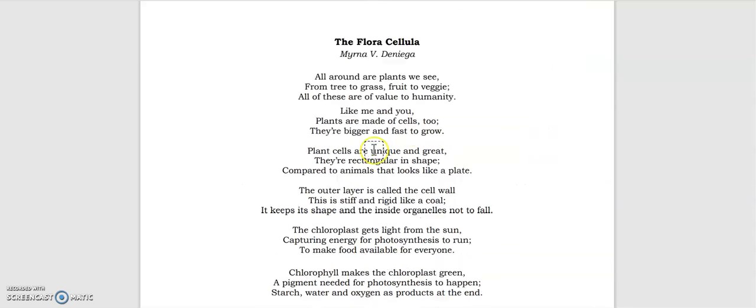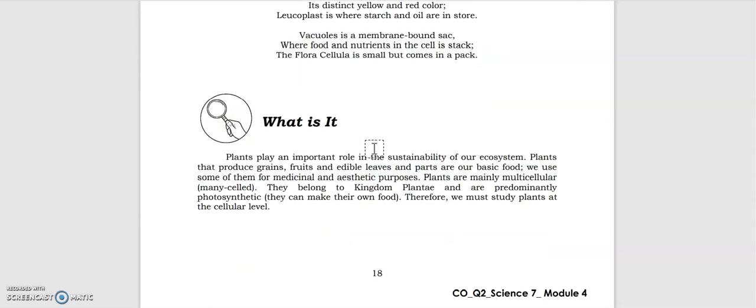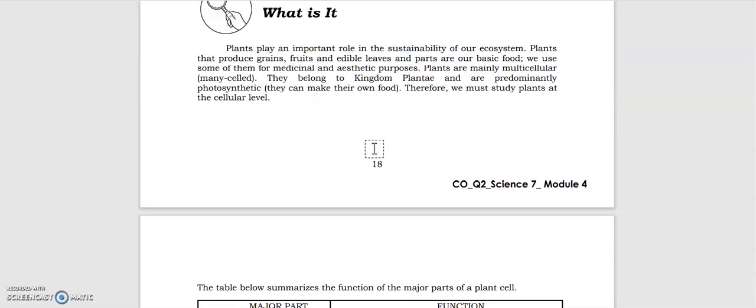For the 'What's New' portion we have here the poem - let me just read that one on your own. Plants play an important role in the sustainability of our ecosystem. Plants that produce grains, fruits, and edible leaves and parts are our basic food. We use some of them for medicinal and aesthetic purposes. Plants are mainly multicellular, which means many-celled. They belong to kingdom Plantae and are predominantly photosynthetic, which means they can make their own food.